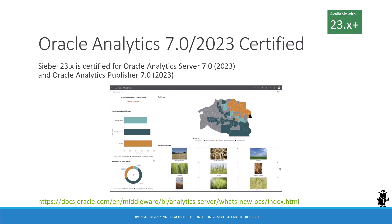As Siebel CRM is upgraded and updated, the BI system has to follow. Many Siebel CRM projects are eagerly waiting for Oracle to update product certifications as new versions of Oracle Analytics Server are released. As of September 2023, Siebel CRM 23 is officially certified for Oracle Analytics Server and Oracle Analytics Publisher 7.0, which also bears the version number 2023 in the official Oracle documentation.